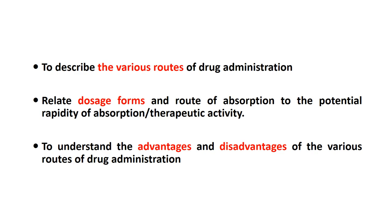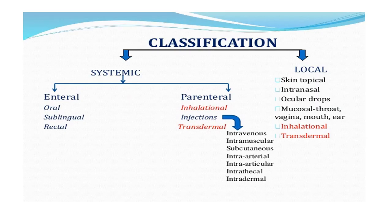Before going into the topic, let's classify the different routes of drug administration. It is divided into systemic and local. Systemic is further divided into enteral and parenteral. Enteral includes oral, sublingual, and rectal. Parenteral includes injections, inhalation, and transdermal. Transdermal is sometimes placed under local administration and sometimes under parenteral.